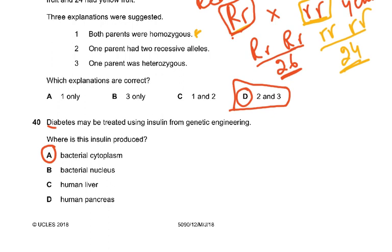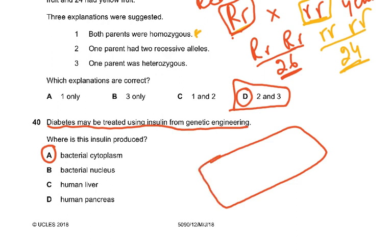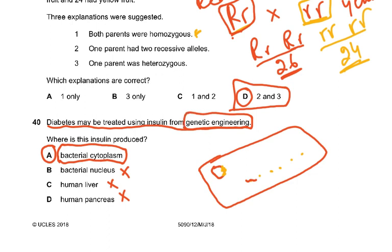Last question, 40: diabetes may be treated using insulin from genetic engineering. Where is the insulin produced? In bacteria, we change the plasmids by inserting the insulin gene. There are ribosomes in the bacterial cytoplasm where the protein is made. So the insulin is produced in the bacterial cytoplasm. Bacteria do not even have a nucleus — it is not produced in the human liver or pancreas. The genetically engineered bacteria produce insulin from the inserted gene.